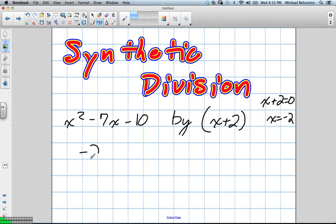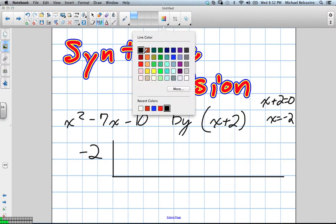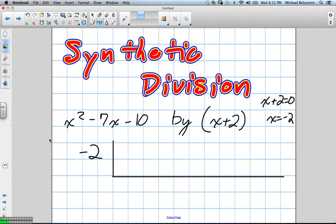Negative 2. You already knew it. Good job. So, we then set it up. That's our k outside. We set up this comma, looks like an upside down division. And we write the coefficients in that we had before. Our coefficients from these terms here are, in this case, 1, negative 7, and negative 10.